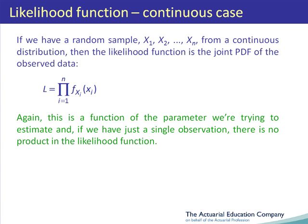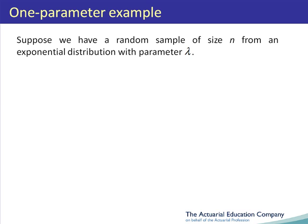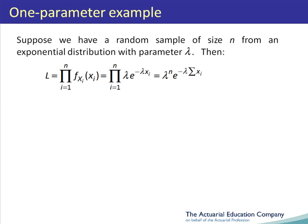Let's look at an example where the random variables are continuous. Suppose we have a random sample of size n from an exponential distribution with parameter lambda. The likelihood function is the product from i equals 1 up to n of lambda times e to the negative lambda x_i. This can be written as lambda to the power of n multiplied by e to the negative lambda times the sum of the x_i's. Taking logs, the log likelihood function is n log lambda minus lambda times the sum of the x_i terms.